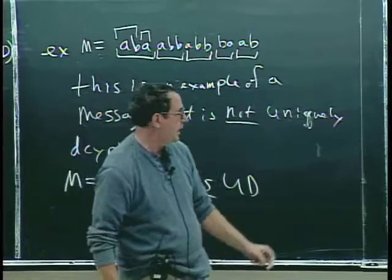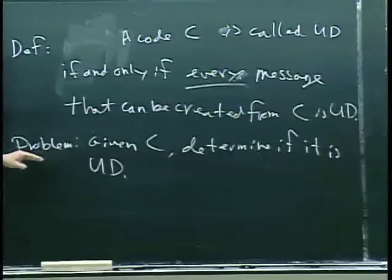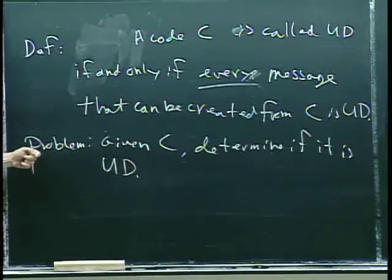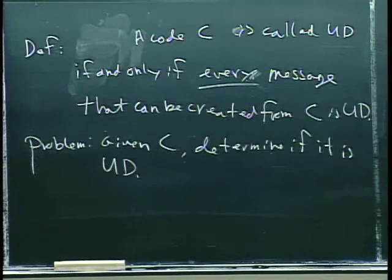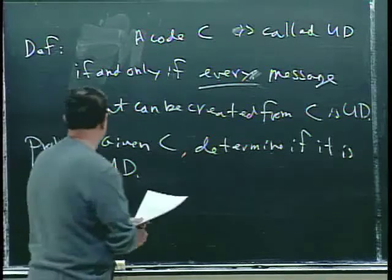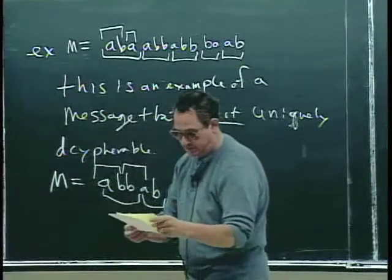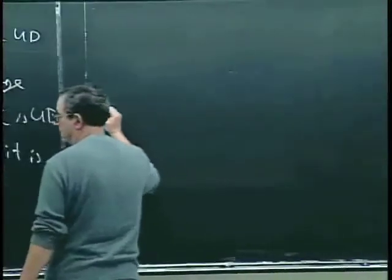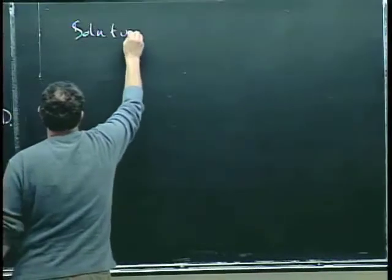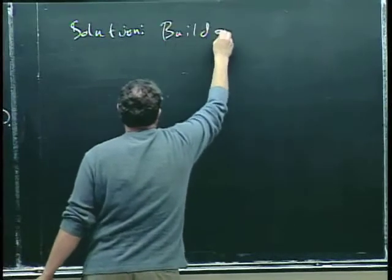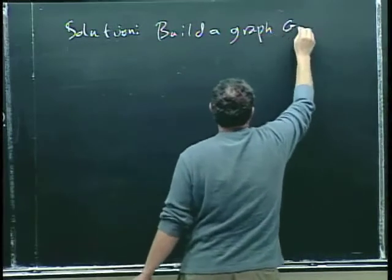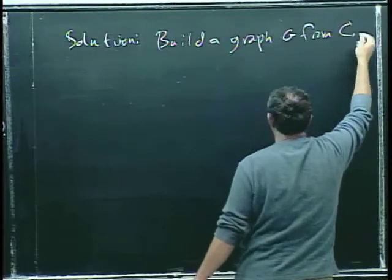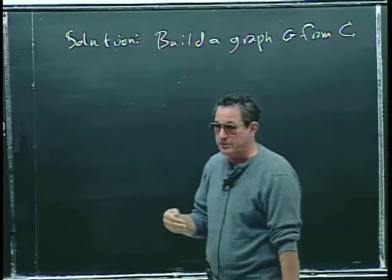What I want to show you is an efficient algorithm for solving this problem. The algorithm is based on building a directed graph and then looking for particular types of paths in that graph. We'll prove that if you can't find one of those paths, the code is uniquely decipherable, and if you can find one, then it's not uniquely decipherable. Here's the solution. First, build a graph G from the code and all its code words.